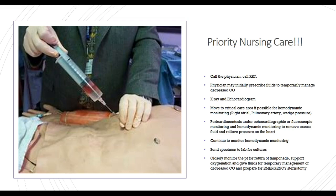Priority nursing care for cardiac tamponade: call the physician and RRT STAT. The physician may initially prescribe fluids to temporarily manage decreased cardiac output while setting up. In the interim, make sure the patient has at least one patent large-bore IV. X-rays and echocardiogram may be performed. If possible, move to a critical care area for hemodynamic monitoring. A pericardiocentesis can be performed in the room — ideally under fluoroscopic and hemodynamic monitoring — to remove excess fluid and relieve pressure on the heart.